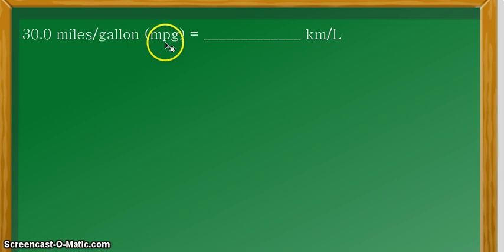This unit, MPG as well as kilometers per liter, is usually used for fuel efficiency, meaning how much of the fuel is usually used up for a certain distance that is being traveled by a car, for example.